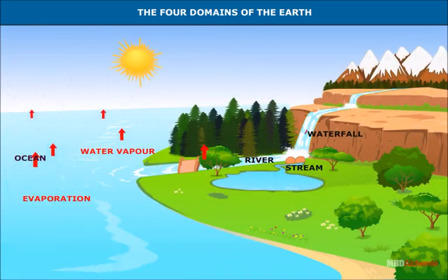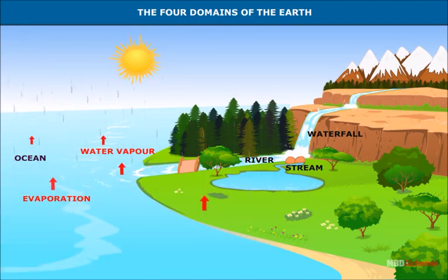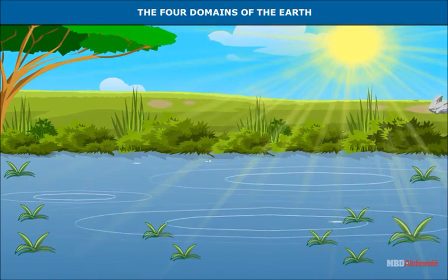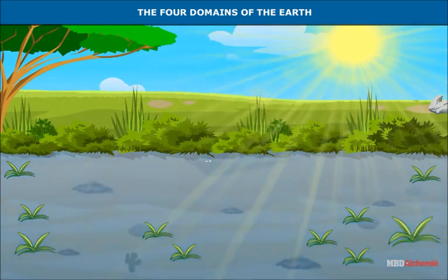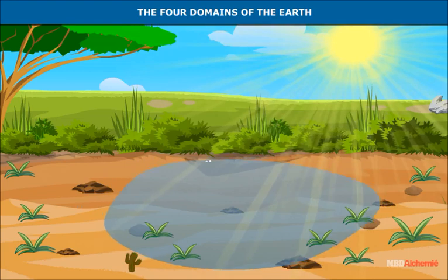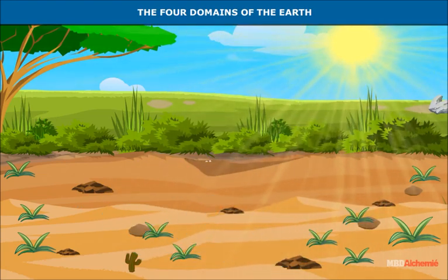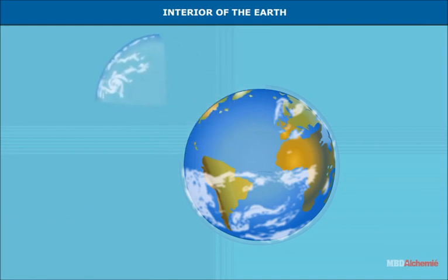Oceans add water vapor to the air, a fact that makes water available on land. The presence of water is essential for all forms of life to survive on Earth; plants cannot grow or live without water.